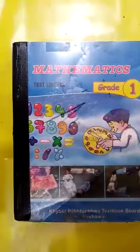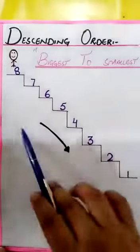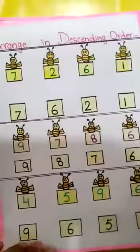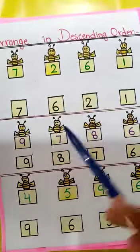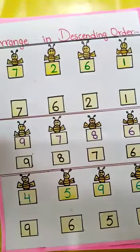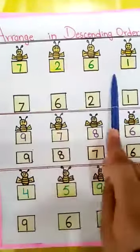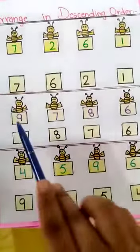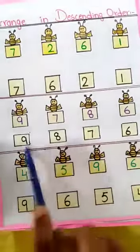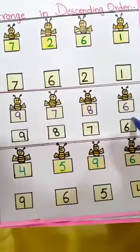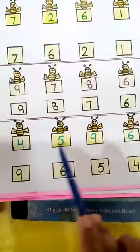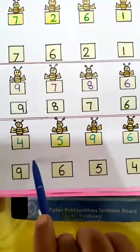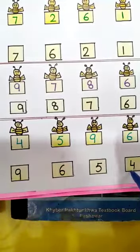Then we have descending order. Descending order means from biggest to smallest, and it also follows backward counting. We have the numbers 7, 2, 6, 1 — arranged in descending order: 7, 6, 2, 1. The next is 9, 7, 8, 6 — arranged: 9, 8, 7, 6. The last question is 4, 5, 9, 6 — the biggest value is 9, then 6, then 5, then 4. From biggest to smallest means descending order.